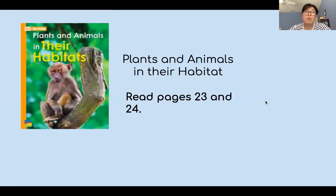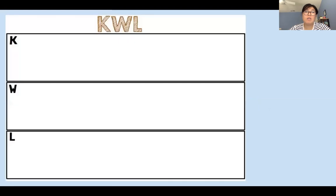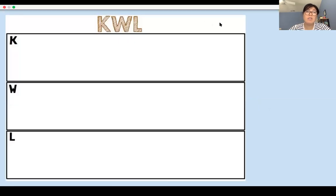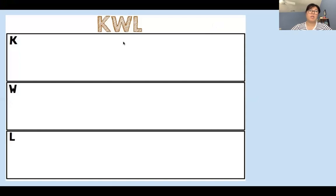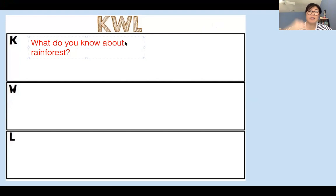What I want us to do is open to pages 23 and 24. You're going to be reading this on your own and try to write as many facts as you can about rainforests. However, before you do that, you're going to do a KWL chart again on Seesaw. K stands for what you already know about rainforests — facts you know before you read the text. Write all the things you already know about rainforests in the K box.